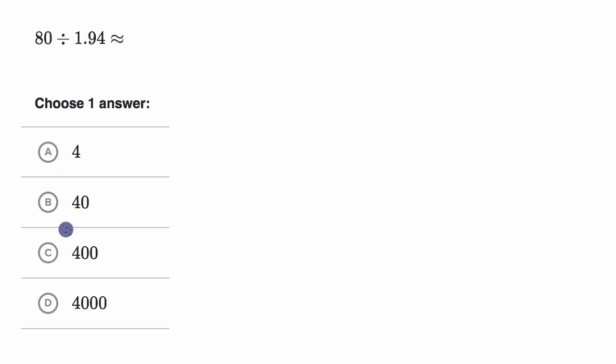So before we even look at these choices, how would we try to do this in our head? Well, we could say 1.94, it's hard to do that in our head, to divide it into 80, but it's awfully close to two. So we could say this is approximately equal to 80 divided by two.